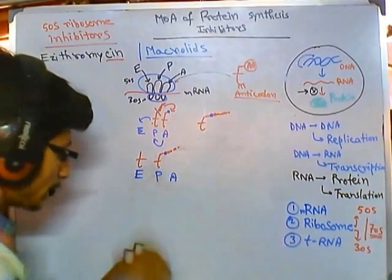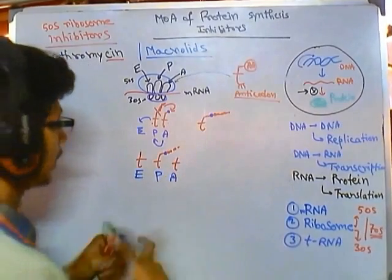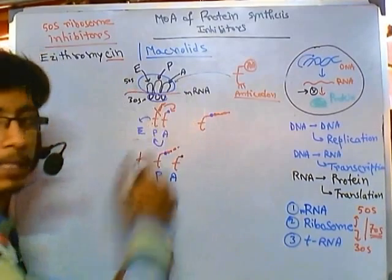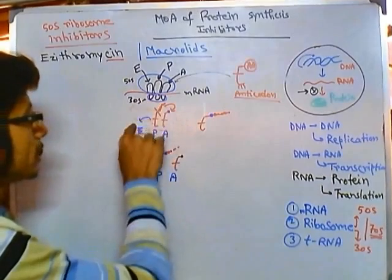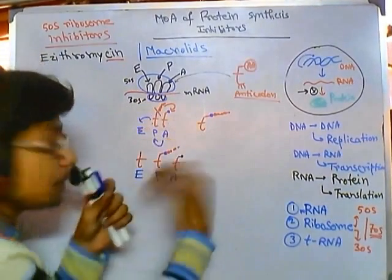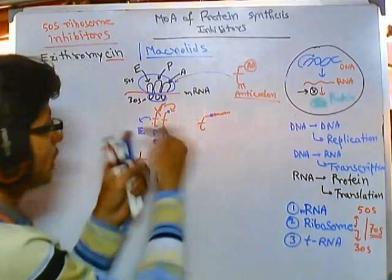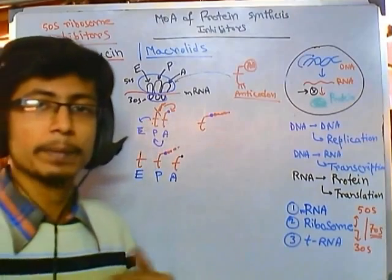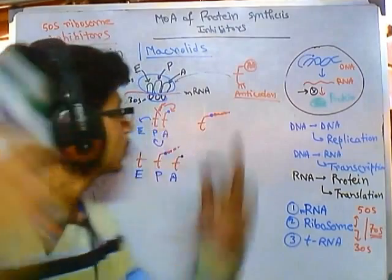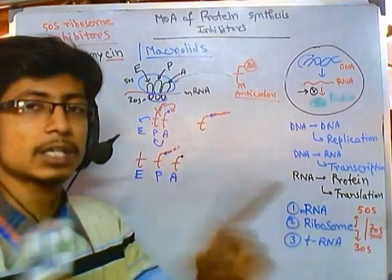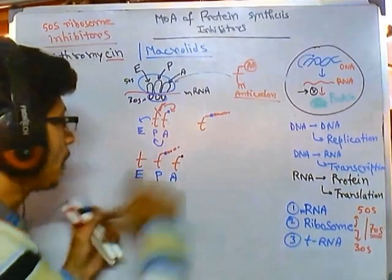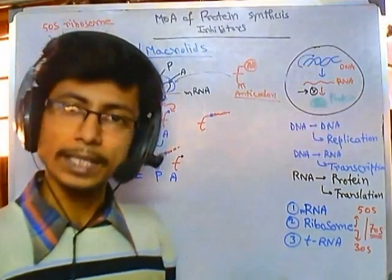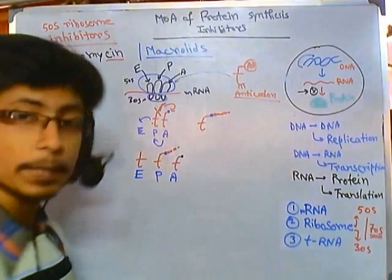As the A site becomes free, a new tRNA brings another amino acid. The tRNA at P migrates to E, the tRNA at A migrates to P. During this translocation, the tRNA carrying the polypeptide chain transfers it to the new tRNA — this is the critical translocation step. This process repeats continuously, building the polypeptide chain, until at the end we get a complete protein.